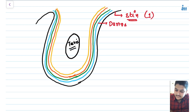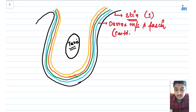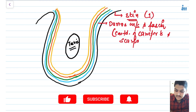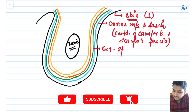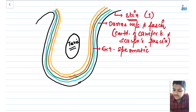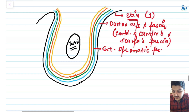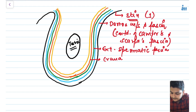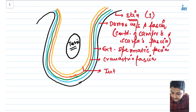The outermost layer is the skin. Then we have the dartos muscle and fascia, which is the continuation of Camper's and Scarpa's fascia from the abdomen. Then we have the external spermatic fascia, which is the continuation of the external oblique aponeurosis. Then the cremasteric fascia, continuation of the internal oblique. And finally the internal spermatic fascia.